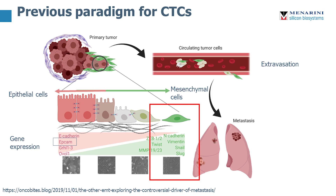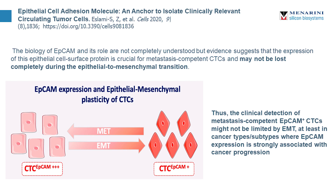Like most things in biology, it's not as simple as that. There's been a lot of emerging research understanding EpCAM as a gradient of expression. EpCAM may be highly expressed in epithelial cells and lowly expressed in mesenchymal cells, but it's still present. A 2020 paper entitled 'Epithelial Cell Adhesion Molecule: An Anchor to Isolate Clinically Relevant Circulating Tumor Cells' indicates that EpCAM itself may not be completely lost during the epithelial to mesenchymal transition, and clinical detection of metastasis-competent CTCs may not be limited by EMT, at least not in cancer subtypes where EpCAM expression is strongly associated with cancer progression. It's possible that EpCAM is actually driving or more closely associated with tumors undergoing metastasis, whether these are metastatic initiator cells or cancer stem cells.